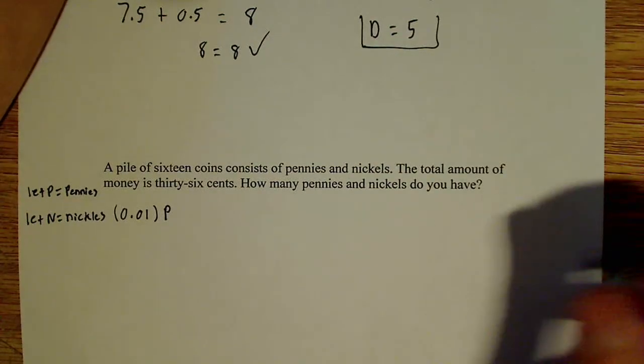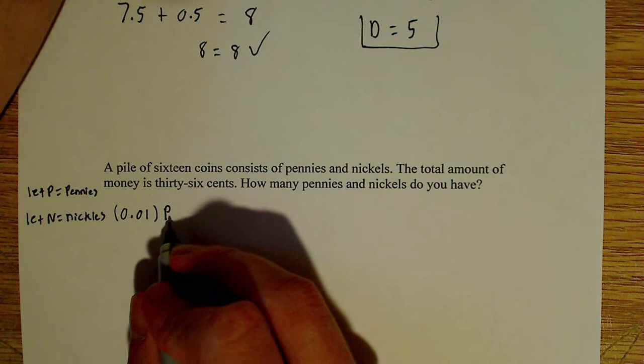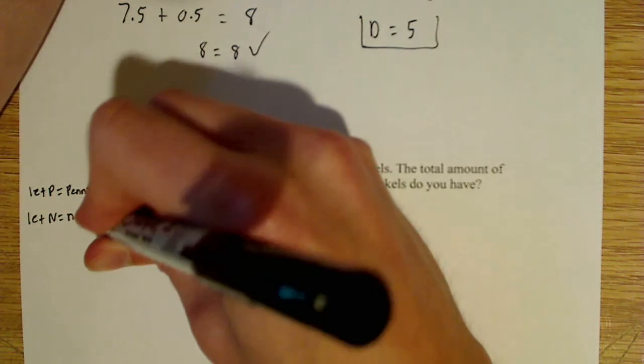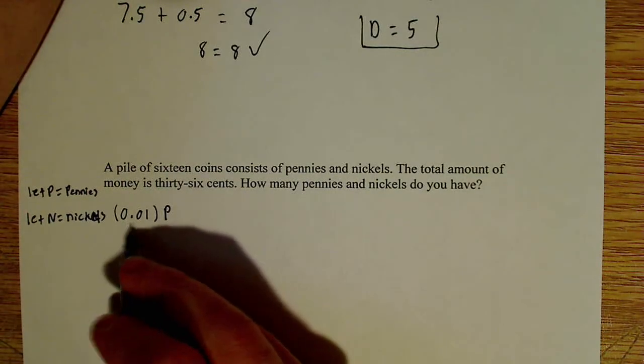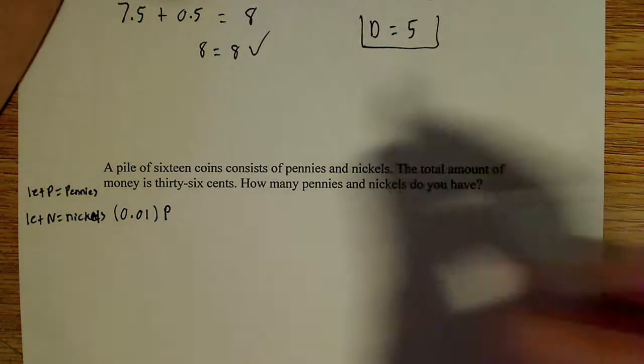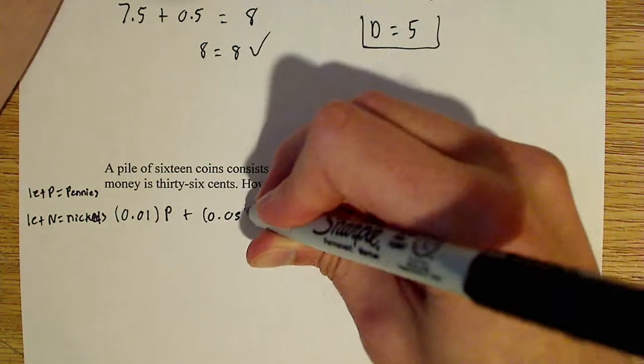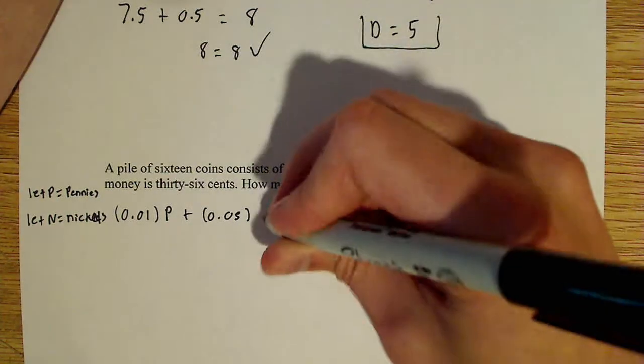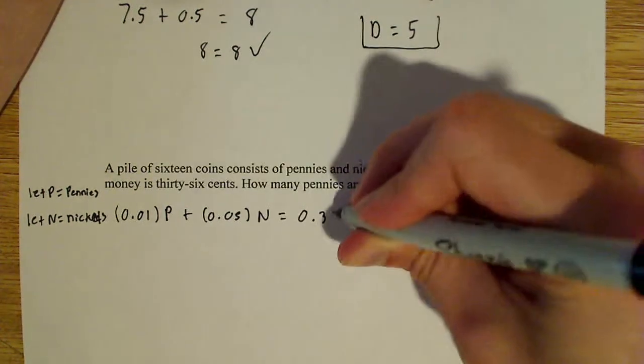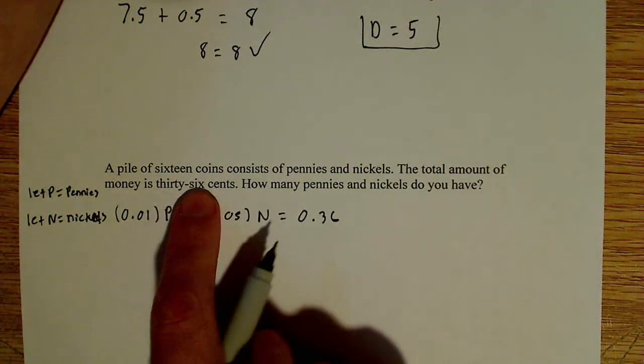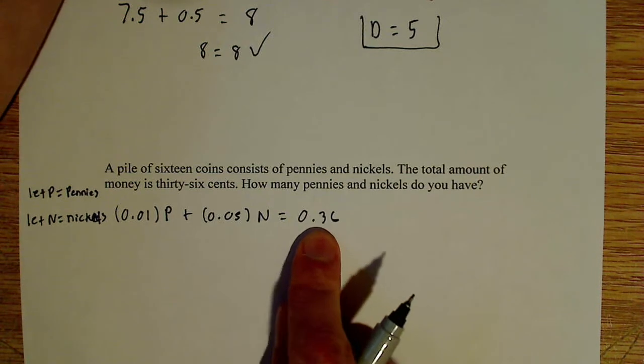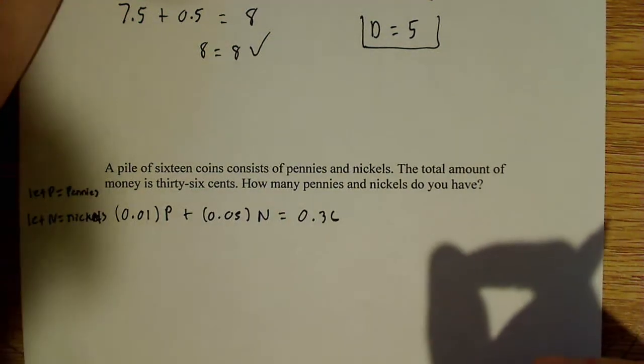So what I have here is 0.01 P, and that's going to be plus the number of nickels. So nickels are equal to 5 cents, or 0.05, and that's going to be times N. And that all has to equal 36 cents. Now that's 0.36 cents. So there's my first equation.